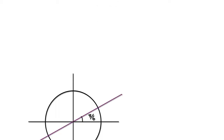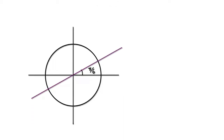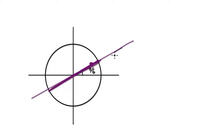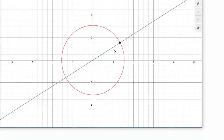Let's give you some practice. Load up desmos.com — I'll put the link in the description. Draw a circle of radius a and an angle of pi over 6. Somehow, within Desmos, come up with parametric equations to simulate a particle oscillating back and forth along this line within the circle. Press pause and have a go.